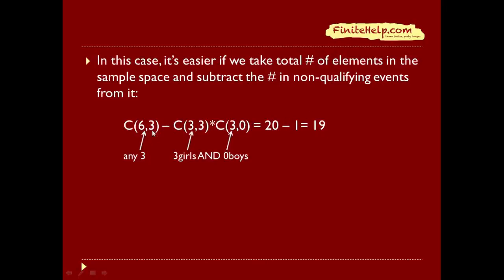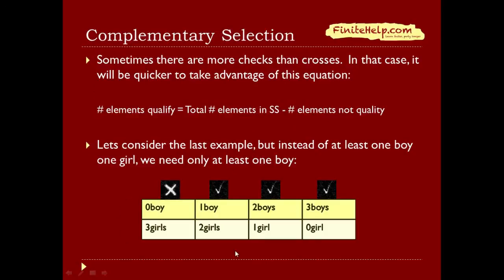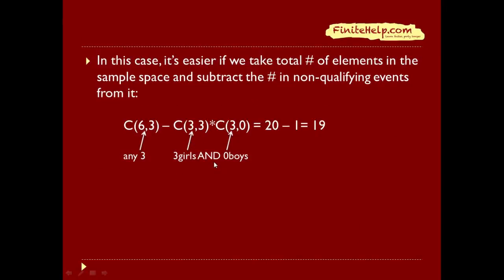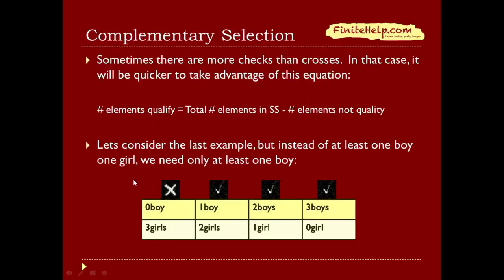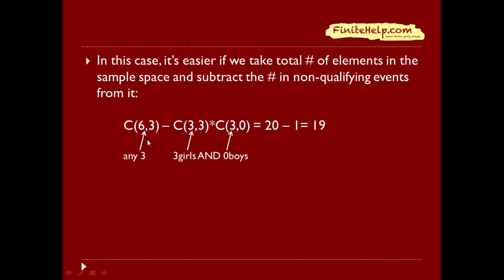So here we take the total — the sum of all four scenarios — and subtract the one that didn't work. Subtracting the one cross is really the same thing as adding the three checks. This approach is much simpler than having to add up three separate things.